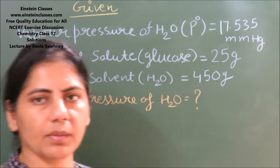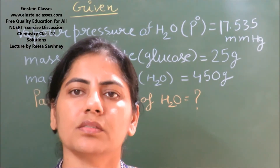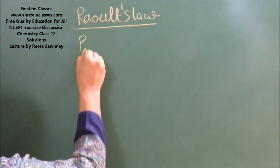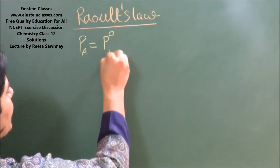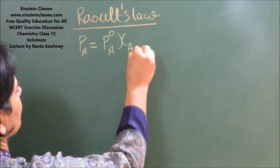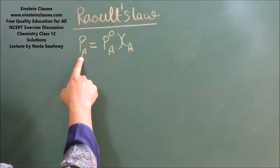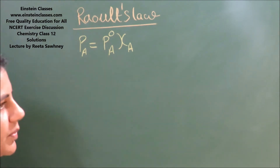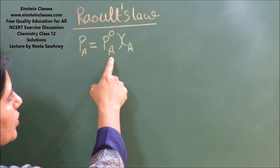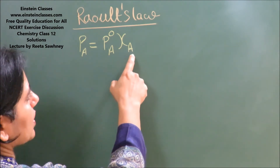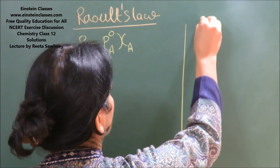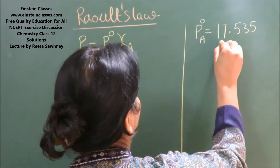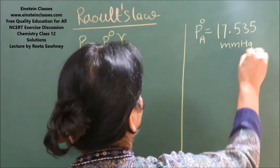So what basic concept are we going to apply? It is Raoult's law of partial pressure. Now according to Raoult's law, the partial pressure of a component is equal to the vapor pressure of the pure component multiplied by the mole fraction of the component. So to find the vapor pressure of water in the presence of glucose, we need the partial pressure of water: PA = P0A × XA. The vapor pressure of pure water, P0A, is already given to us as 17.535 mmHg.